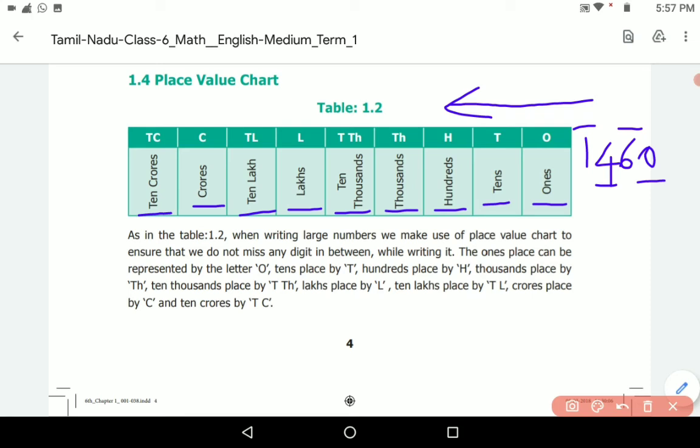As in Table 1.2, while writing large numbers we make use of place value chart to ensure that we do not miss any digit in between while writing it. The ones place can be represented by the letter O, tens place by T, hundreds place by H, thousands place by TH, ten thousands place by TTH, lakhs place by L, ten lakhs place by TL, crores place by C, and ten crores by TC.